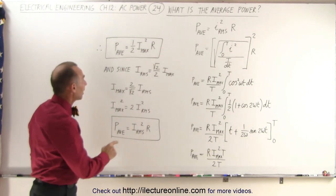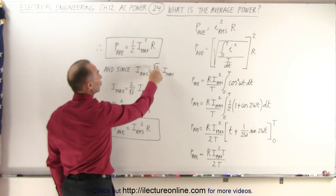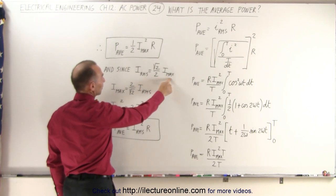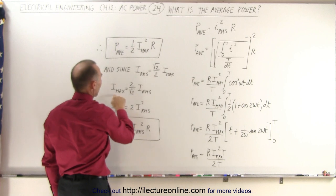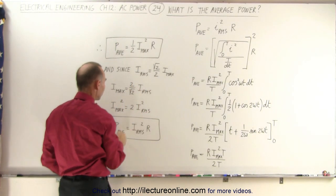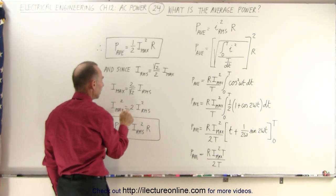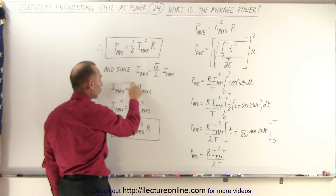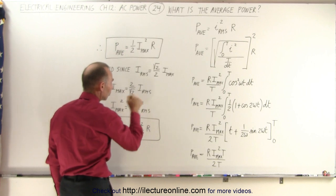Now, we realize that I RMS is defined as the square root of 2 over 2 times I max. If we then solve this for I max, we get 2 over the square root of 2 times I RMS. If we square both sides, we get I max squared is equal to 2, because it's 4 over 2, which is 2 times I RMS squared.